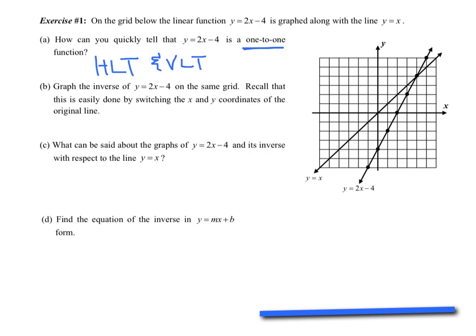Part B, graph the inverse on the same grid. Recall this is easily done just by switching the x and y. That symbol for inverse is f inverse. I'm just going to take the points I have and flip them. So this point 2, 0 becomes 0, 2. Just flipping my x and y. 3, 2 becomes 2, 3. I'm going to label this f inverse.